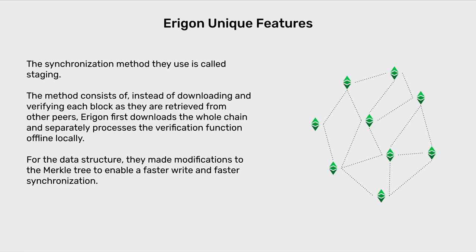Eragon unique features. The synchronization method they use is called staging. The method consists of, instead of downloading and verifying each block as they are retrieved from other peers, Eragon first downloads the whole chain and separately processes the verification function offline locally. For the data structure, they made modifications to the Merkle tree to enable faster writes and faster synchronization.